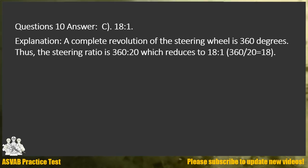Question 10. Answer C. 18 to 1. Explanation: A complete revolution of the steering wheel is 360 degrees. Thus the steering ratio is 360 divided by 20, which reduces to 18 to 1.